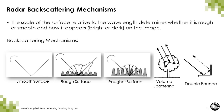The first backscattering mechanism is a smooth surface, also known as a specular reflector. A smooth surface acts like a mirror for the incident radar pulse, such that most of the incident radar energy is reflected away from the sensor, causing those areas to appear very dark. Open water surfaces tend to be specular reflectors.